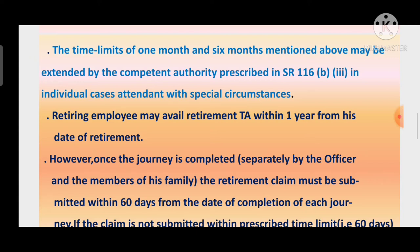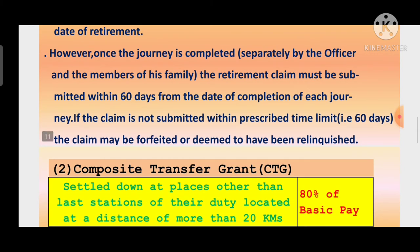चार प्रकार का benefit - self and family travel, composite transfer grant, transportation of personal effects, reimbursement of conveyance - यह सब के लिए जब retired employee retire होता है, within one year वो TA claim करेगा। Once the journey is completed separately by the officer and members of his family, the retirement claim must be submitted within 60 days from the date of completion of each journey।